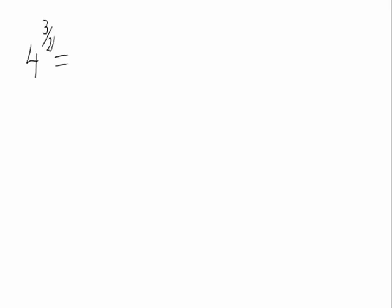Let's calculate 4 raised to the power of 3 halves. We can see that the exponent is a fraction. This is always calculated like: we write the 4 raised to the numerator of the fraction, and now the root of index 2 — the denominator.